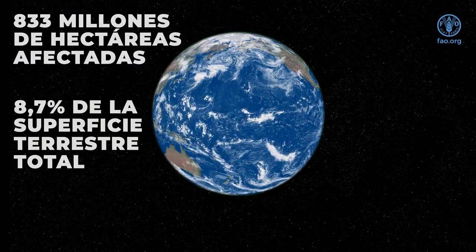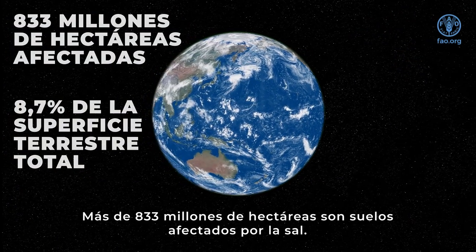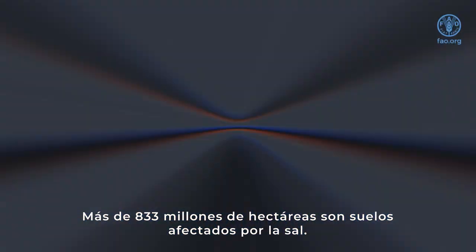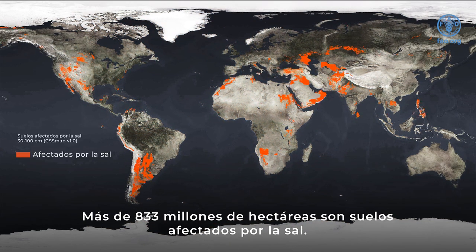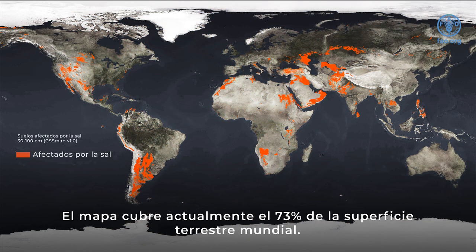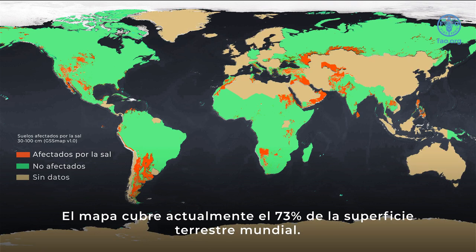Over 833 million hectares are salt affected soils. The map currently covers 73% of the global land area.